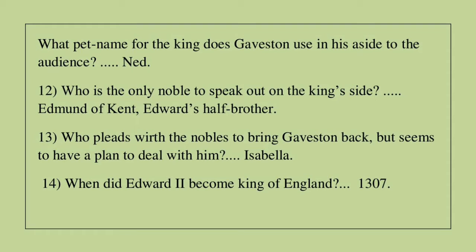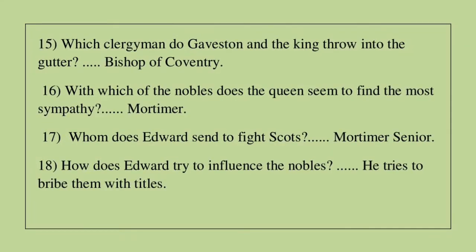Question 12: Who is the only noble to speak out on the king's side? The answer is Edmund of Kent, who is Edward's half-brother. Question 13: Who pleads with the nobles to bring Gaveston back but seems to have a plan to deal with him? The answer is Isabella. Question 14: When did Edward II become king of England? The answer is 1307.